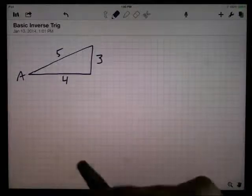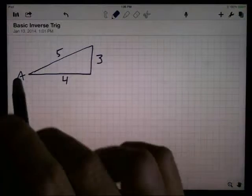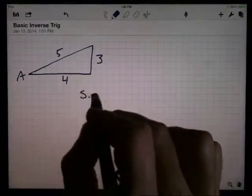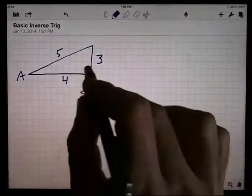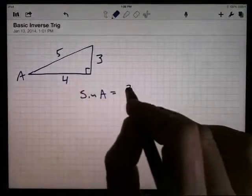So our definition of the trig functions here, let's look at this angle A. I know that the sine of angle A is the opposite divided by the hypotenuse. There's the right angle. So 3 divided by 5.